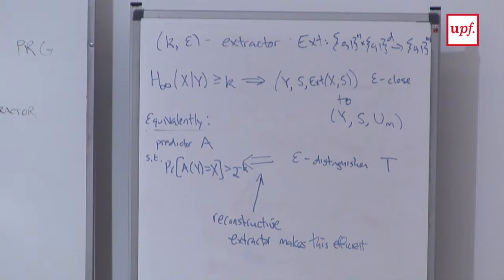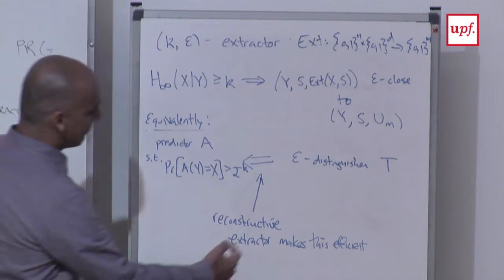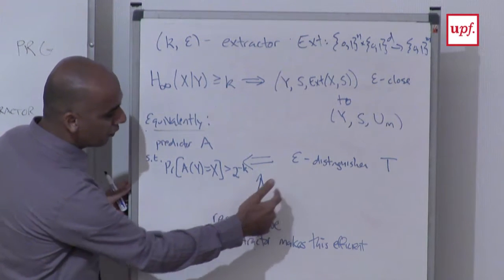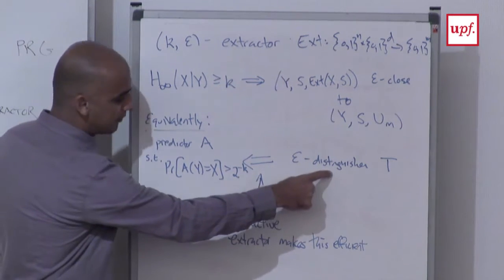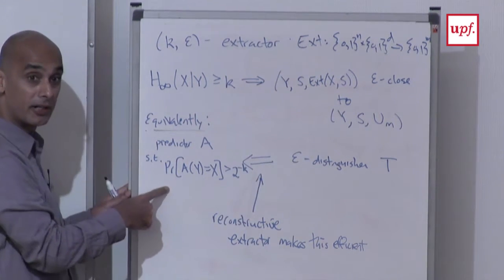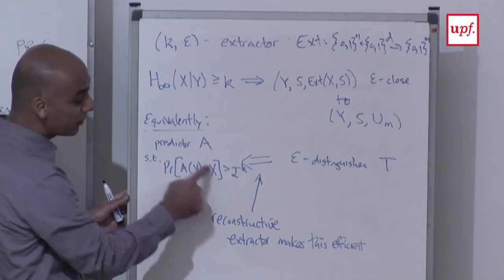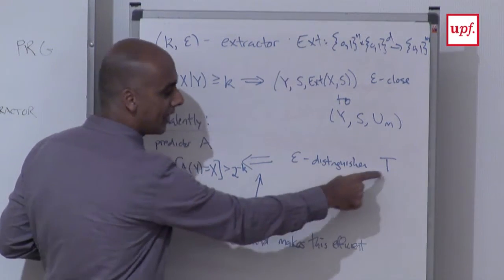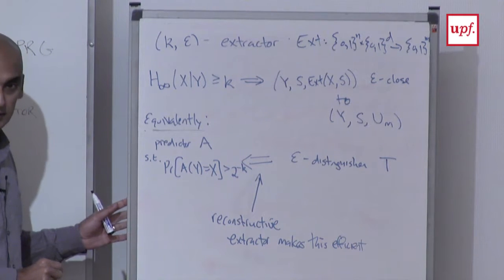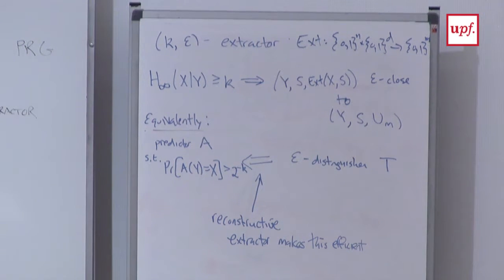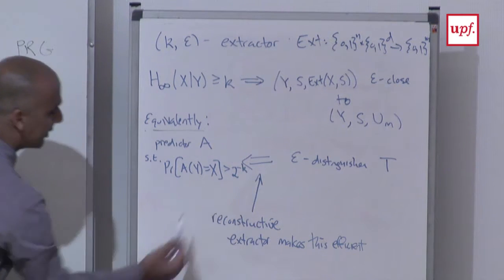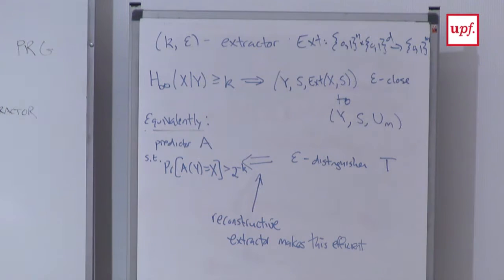What does a reconstructive extractor do? It's meant to give you an efficient conversion of tests distinguishing the output into predictors. Not just saying there exists some predictor, but actually we get an efficient algorithm A if we start with an efficient test T. This is precisely what we want when trying to convert computational unpredictability entropy — the hardness of predicting x from y by computationally bounded algorithms — into pseudorandomness.